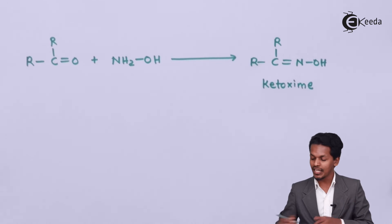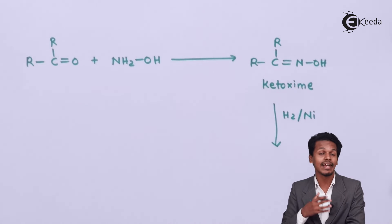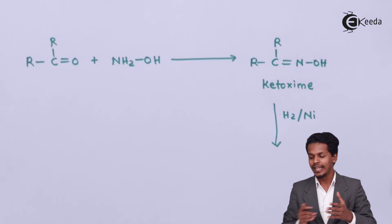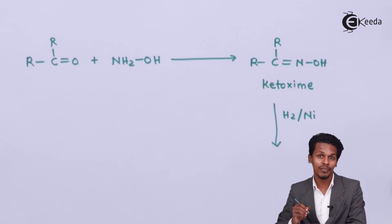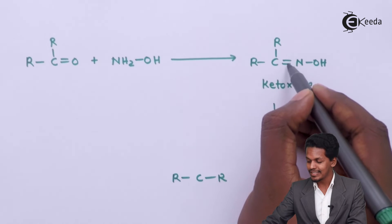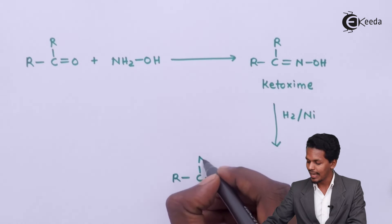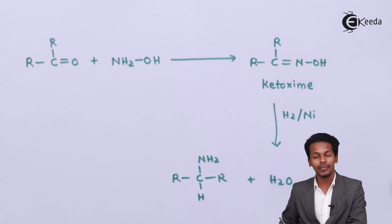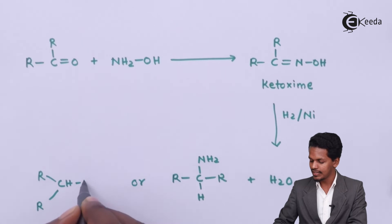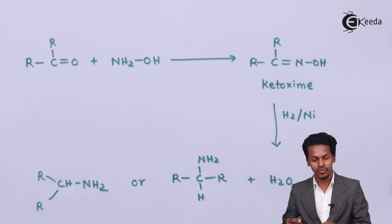Again, the same procedure as before: we react this oxime with H2 in presence of a nickel catalyst, or with lithium aluminium hydride, or with sodium reacted with ethanol to produce nascent hydrogen. This reduces the C double bond N. The product we get is RCR with NH2 and one hydrogen atom, and H2O is removed as a byproduct. So the product is RCR-H-NH2, which is again a primary amine.